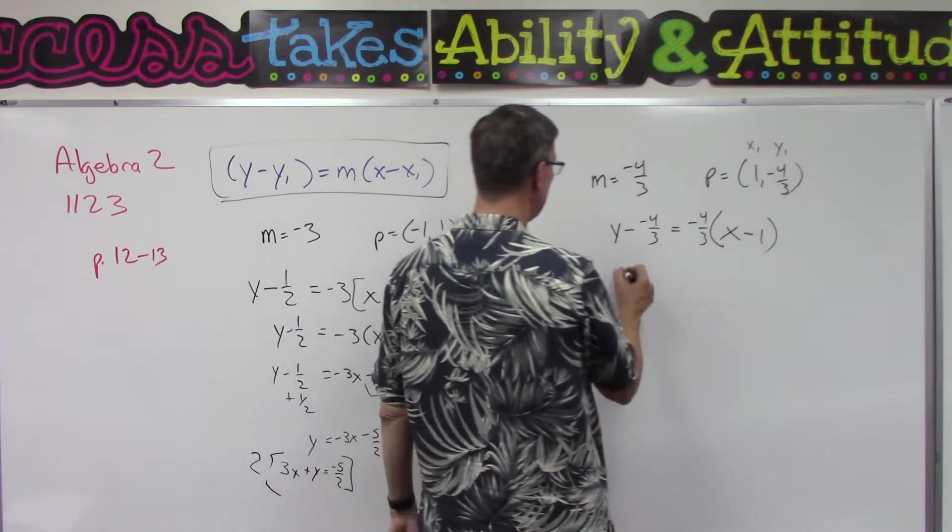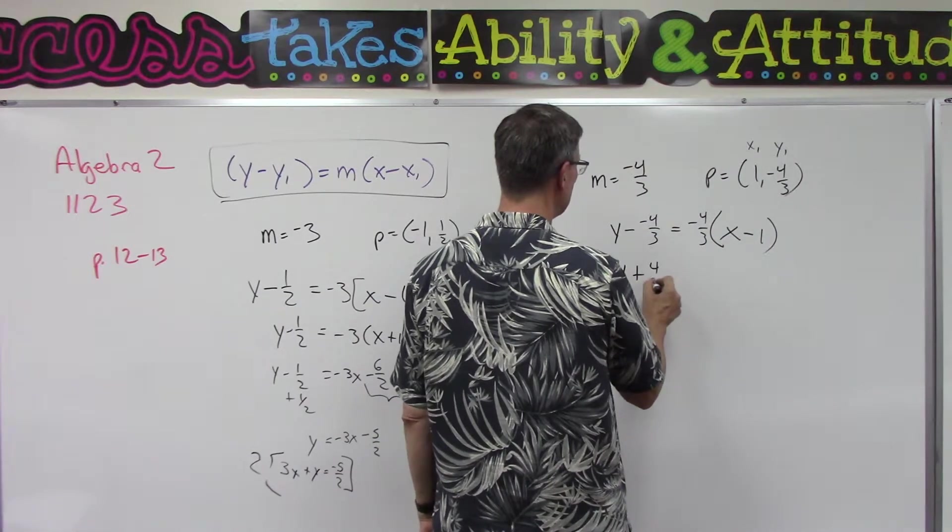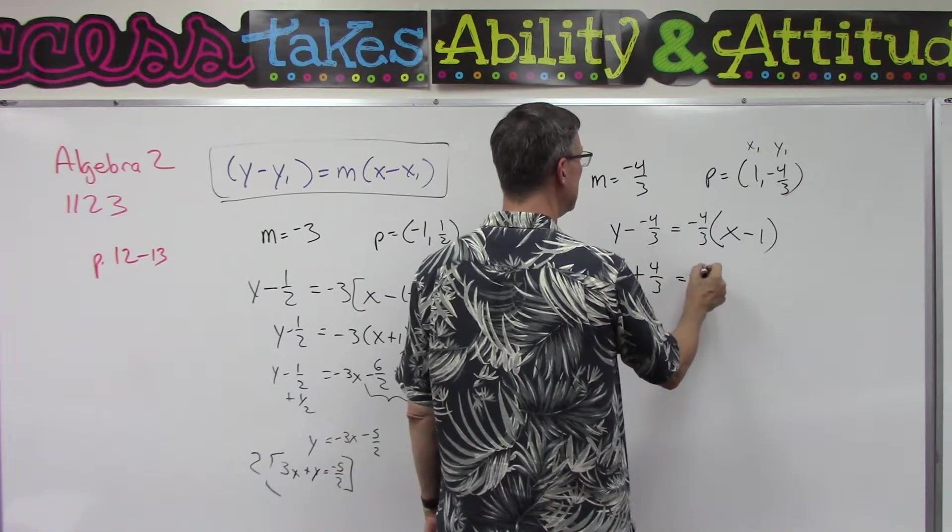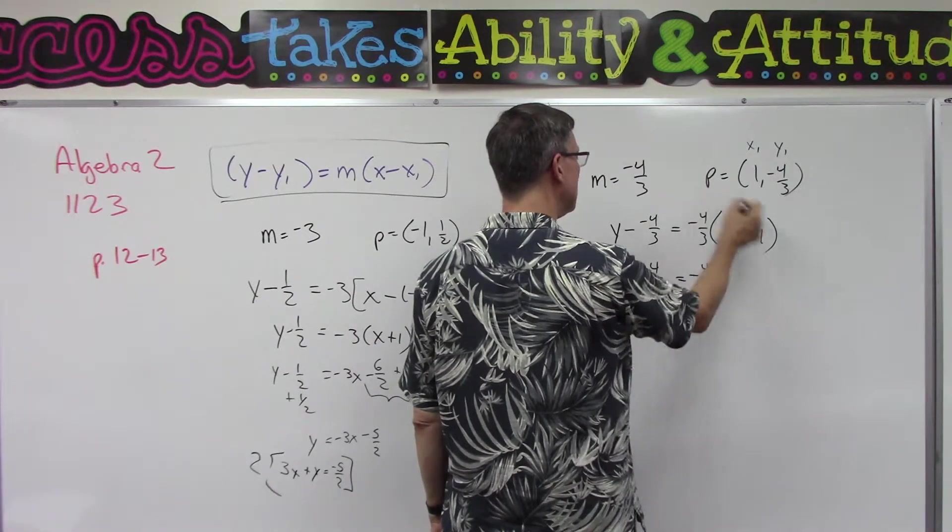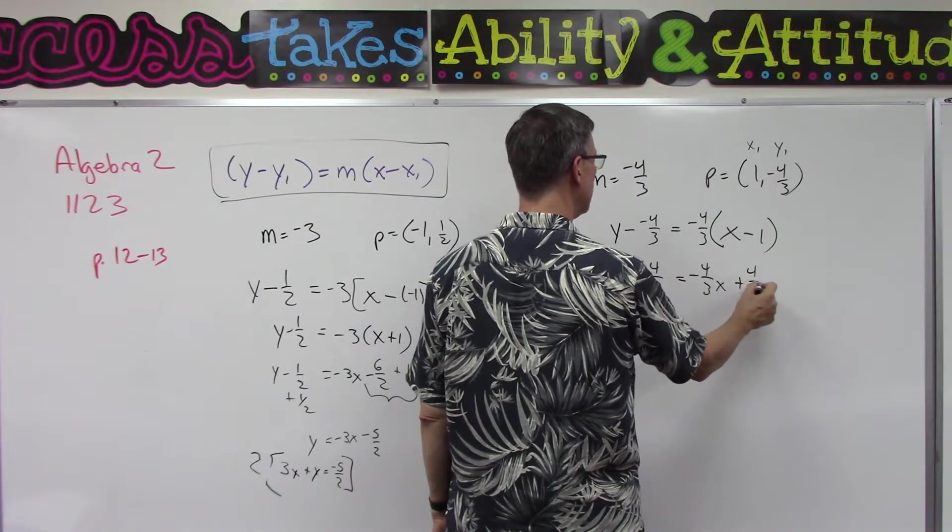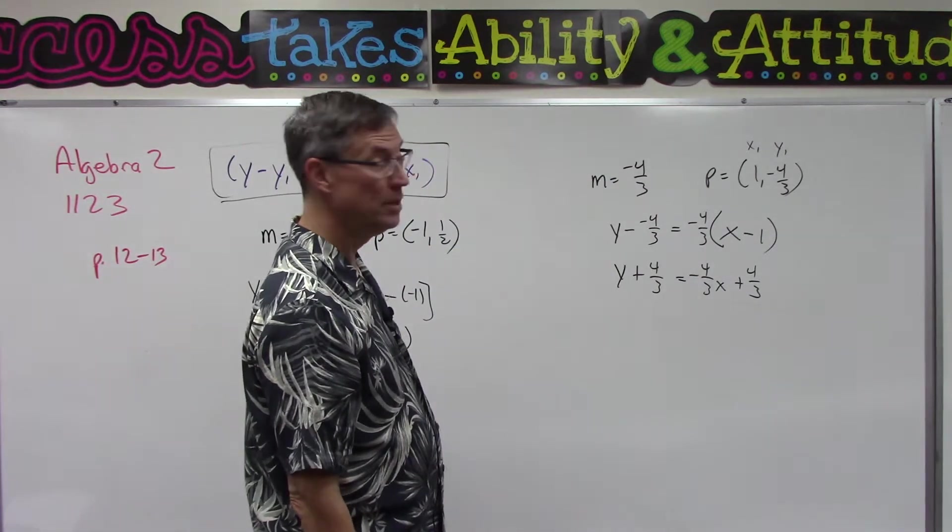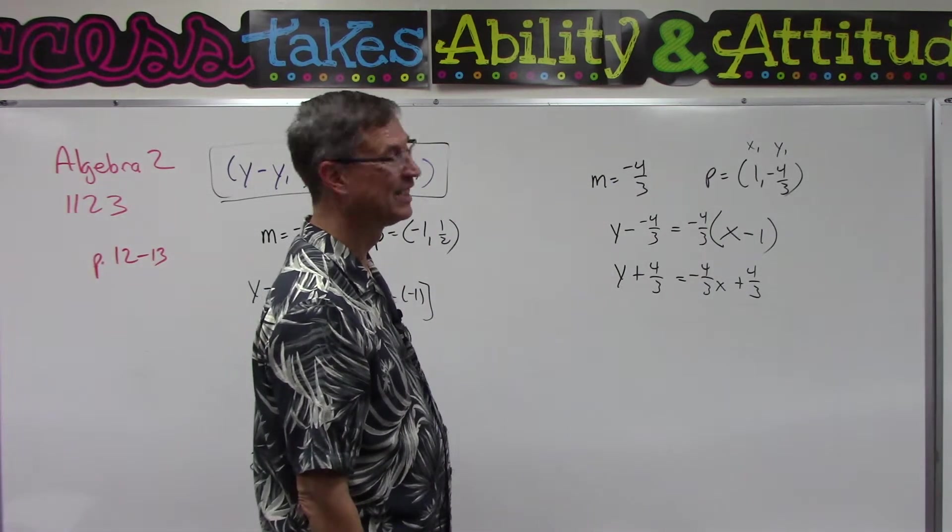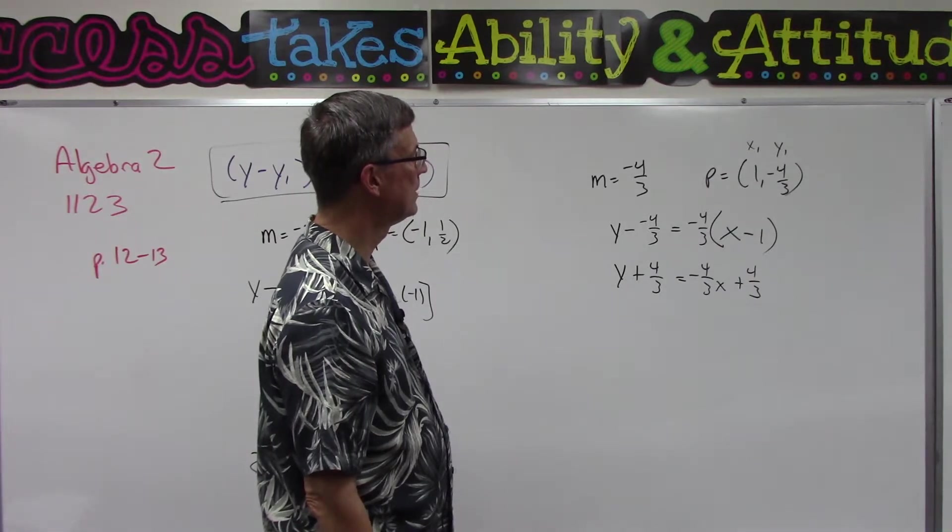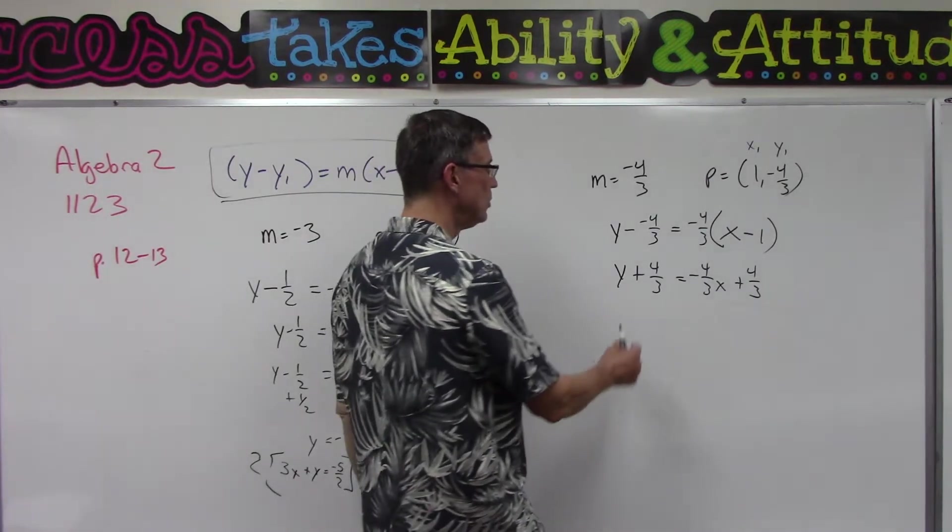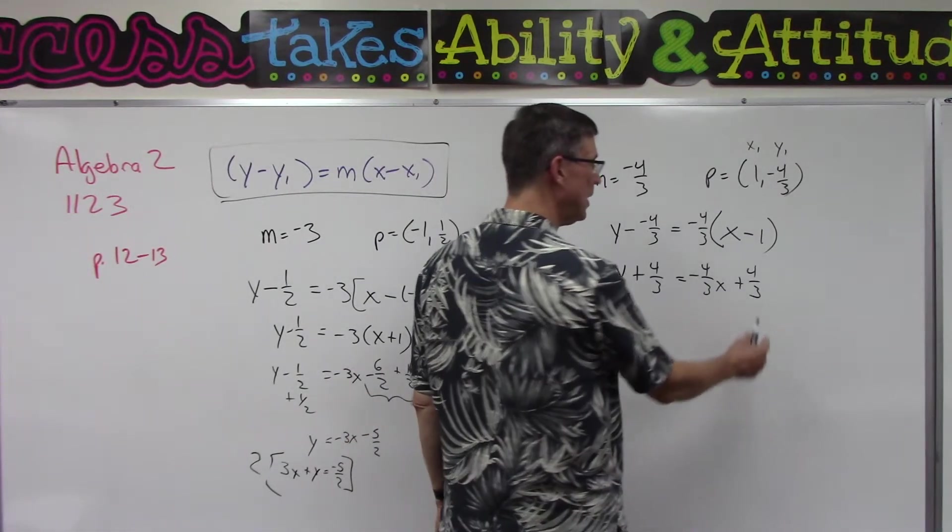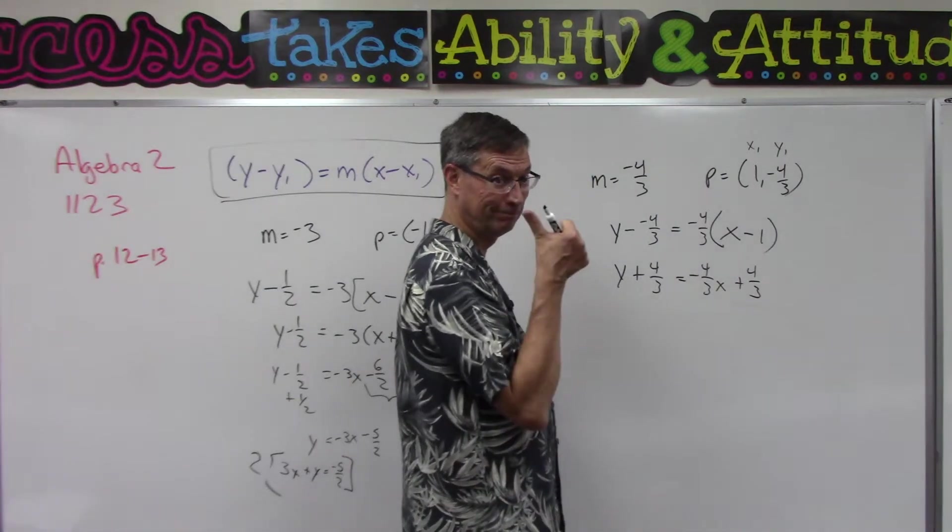This becomes y plus 4/3 - negative 4/3x, negative times negative is positive 4/3. You know what, this one's going to be easier than you think, I can see it already. Nice. Because when you subtract the 4/3 from both sides, you see what happens? Cool.